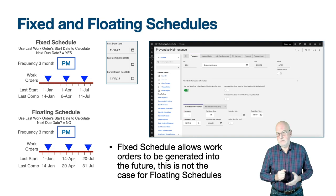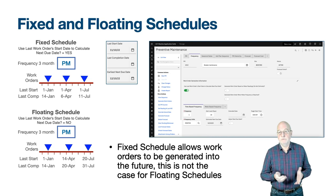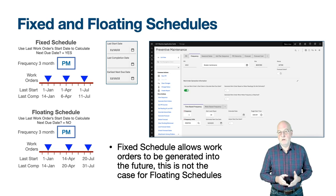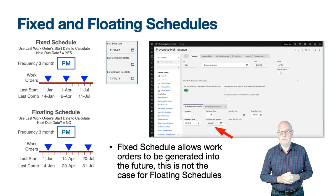In the time-based frequency tab, a frequency must be entered. The frequency units will be days, weeks, months, or years, and the frequency field must be a positive value — but it can also be zero, which is the default. A zero-frequency PM can be used for on-demand generation of work orders. To be certain no work order is generated, do not enter an estimated next due date. If one exists, a work order will be generated when the estimated next due date is today or in the past.